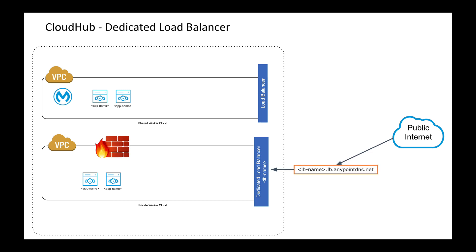The dedicated load balancer has its own DNS name — it's loadbalancername.lb.anypointdns.net. With the dedicated load balancer, you can put a vanity URL on top of that, so instead of that URL it could be example.com. When a user hits that endpoint, traffic is routed to the worker the same way it is with a shared load balancer. But instead of ports 8081/8082, there are different port numbers for the internal workers: port 80 gets routed to 8091, and HTTPS traffic on port 443 gets routed to 8092.